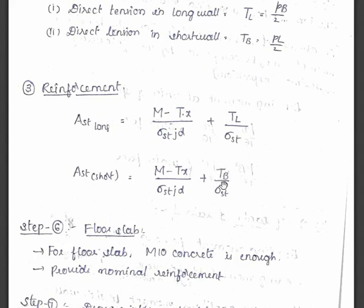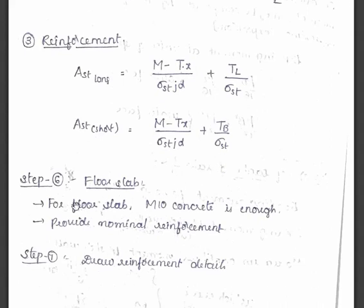Step 6 is about designing floor slab. So for floor slab M10 concrete is enough. We have to provide the nominal reinforcement. We shall see that in numerical. Step 7 is we have to draw the reinforcement details. Let us see the numerical in the next video.